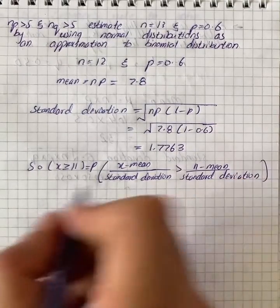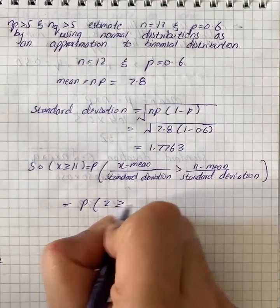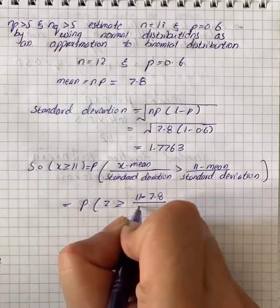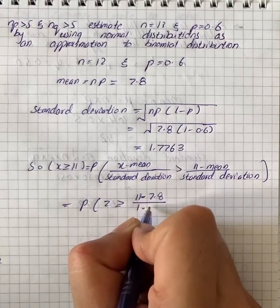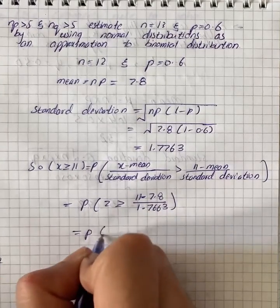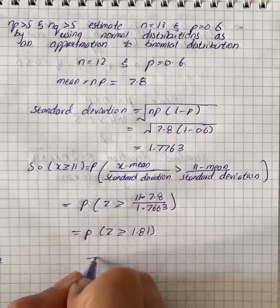By putting values, we have p into z greater than or equal to 11 minus 7.8 divided by 1.7663. On simplification, we have p into z greater than or equal to 1.81, and it is equal to 0.4649.